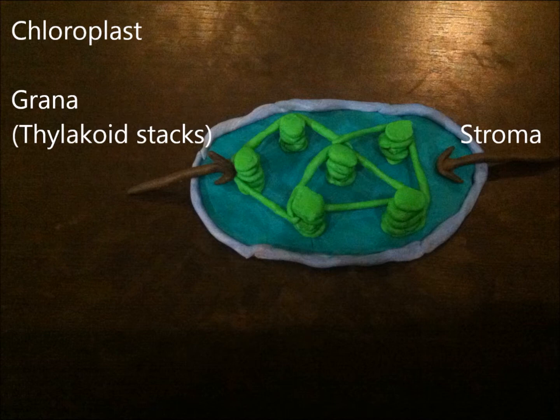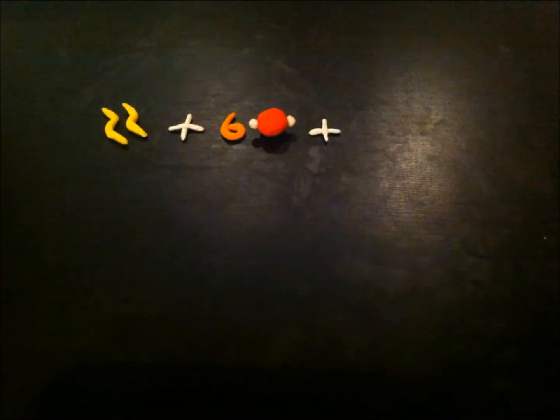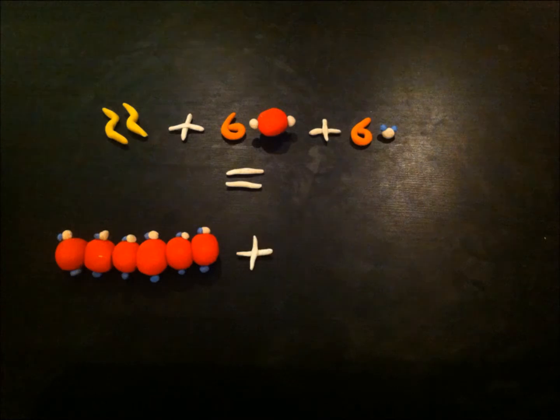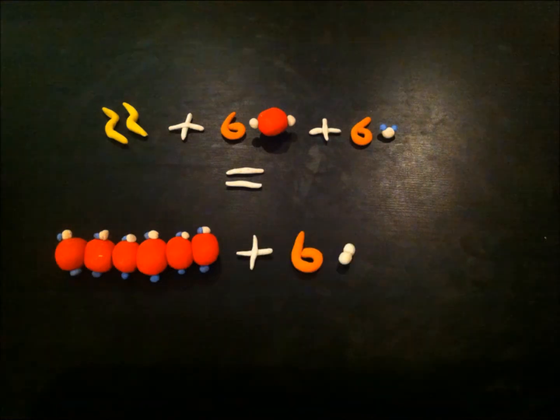Photosynthesis transforms light energy into sugars. This occurs naturally in plants. Photosynthesis occurs in the chloroplast of a plant cell. General equation: light energy plus 6 CO2 plus 6 water molecules produce glucose and 6 oxygen molecules.